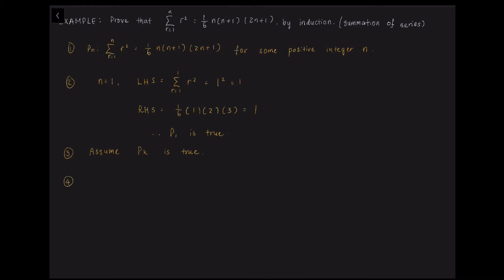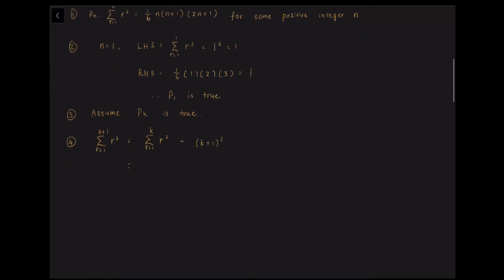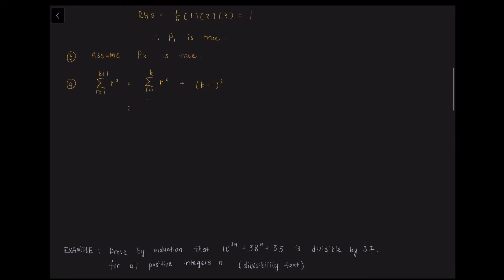And the fourth step, the hardest part, is to prove P(K+1). So the sum of R squared from 1 to K+1 is equivalent to the sum of R squared from 1 to K plus (K+1) squared. And then we also know that the sum of R squared, the formula is 1/6 times K times (K+1) times (2K+1) plus (K+1) squared.